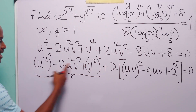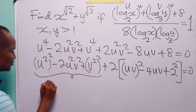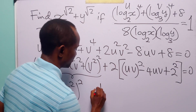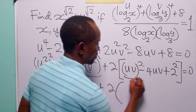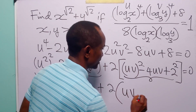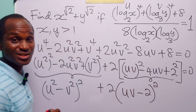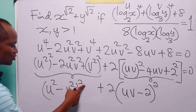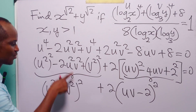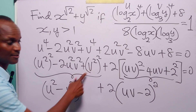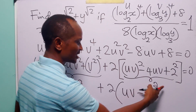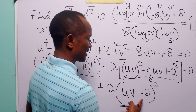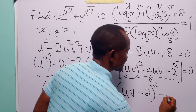Now, you can see that the first three terms form a perfect square: u squared minus v squared, all squared. Then, plus 2 into another perfect square: uv minus 2, all squared. This is still equal to 0. When we expand these brackets, we get u to the power 4, minus 2u squared v squared, plus v to the power 4 from the first, and u squared v squared, minus 4uv, plus 4 from the second.